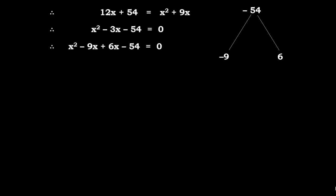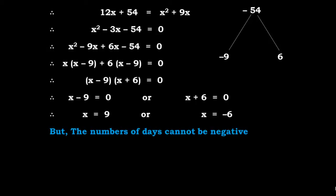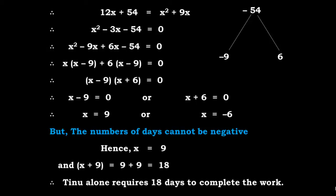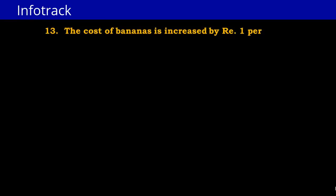So X² − 9X + 6X − 54 = 0. Taking X common from the first two terms: X(X − 9), and 6 common from the next two terms: 6(X − 9) = 0. Therefore (X − 9)(X + 6) = 0, so X = 9 or X = −6. The number of days cannot be negative, therefore X = 9. That means X + 9 = 9 + 9 = 18. Tinu alone requires 18 days to complete the work.